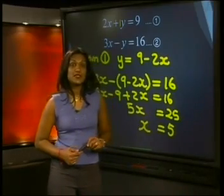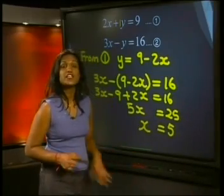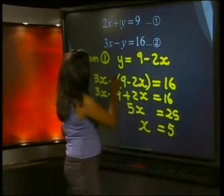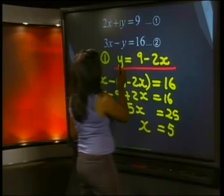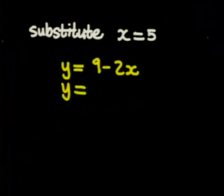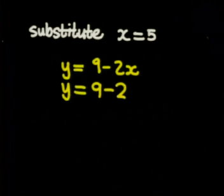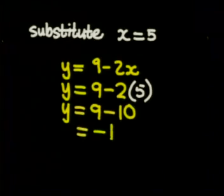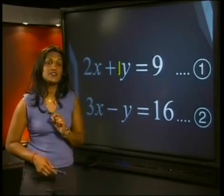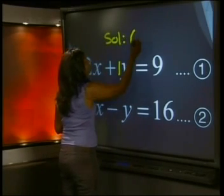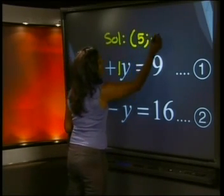Now, what do you do next? We substitute this result into any of the equations. I'm going to use this one here, where y is written on its own already. y is equal to 9 minus 2 times 5, which is 9 minus 10. So y is equal to negative 1. We have found our solution. It is the ordered pair (5, -1).